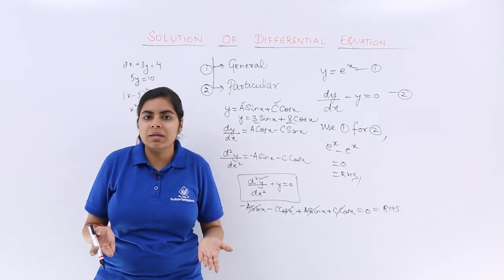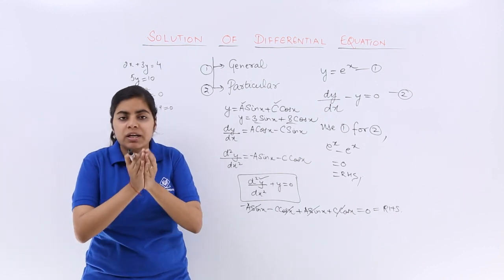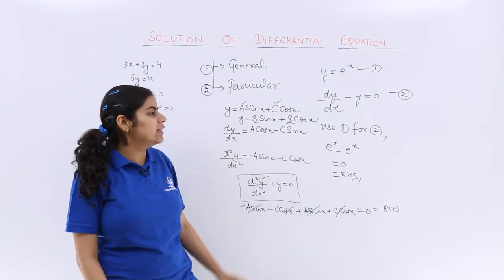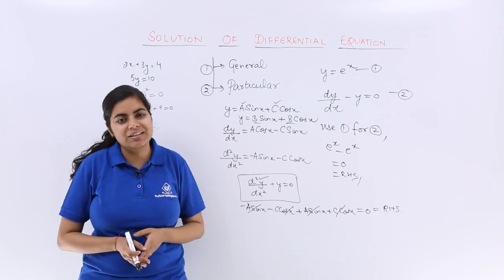General solution does not have any particular value assigned to the constants. Particular literally means specific. So specific value assigned to the arbitrary constants gives me a particular solution, while the above one is a general solution.